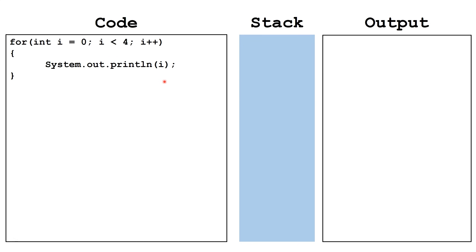Let's trace out this loop. We'll start by declaring int i and setting it equal to zero. Next, we check: is i less than four? It is, so we may continue with the loop. We print off the value of i, which is zero. At the end of the loop, we increment i by one to become one. Next, we check: is i still less than four? It is, so we may continue the loop. We print off the value of i, in this case one.